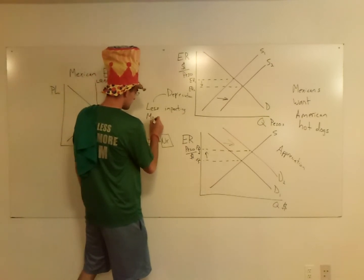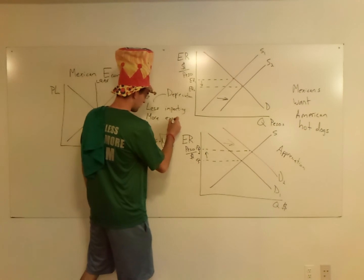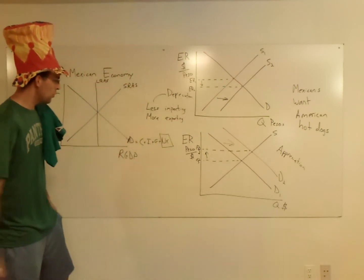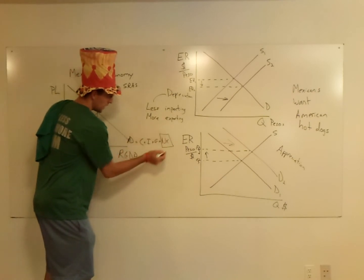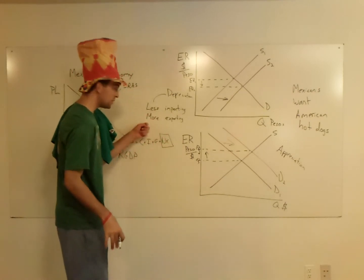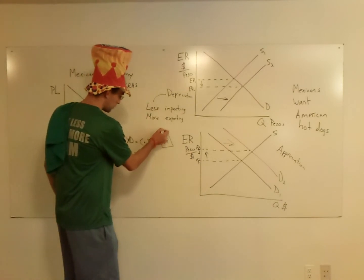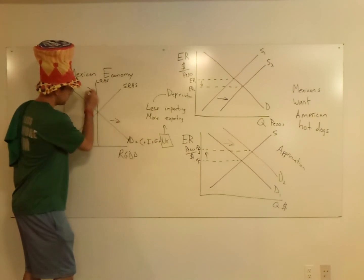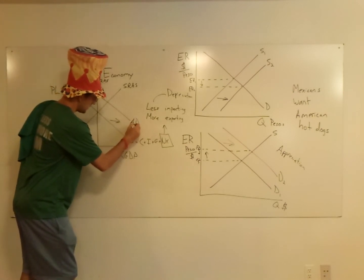So they're going to do more exporting due to this currency. Which means that their net export—the balance between exports and imports, exports minus imports—exports is getting bigger and imports is getting smaller. That means net exports have got to be going up. So your AD curve goes to the right.